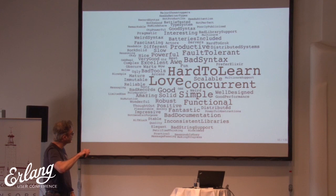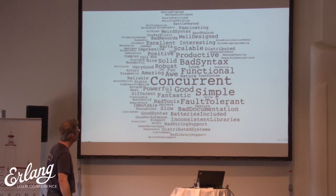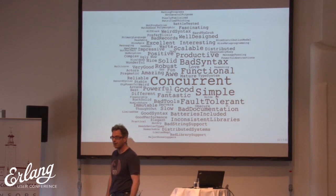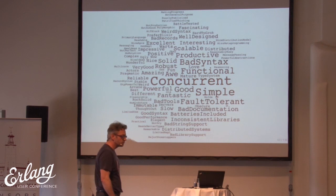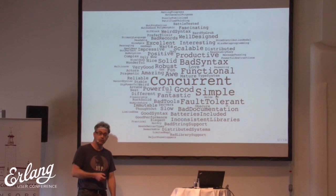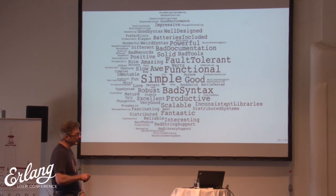Let me take those two outliers out of the tag cloud. When I remove love and remove hard-to-learn, what do we see? Joe's message has apparently gotten across — it is a concurrency-oriented language. Joe's book says 'programming for a concurrent world.' Concurrency-oriented language has gotten across — people view it as a concurrent language. Removing that outlier, the next wave shows things becoming more balanced: simple, good, bad syntax jumps out, functional, fault-tolerant, bad documentation, scalable.